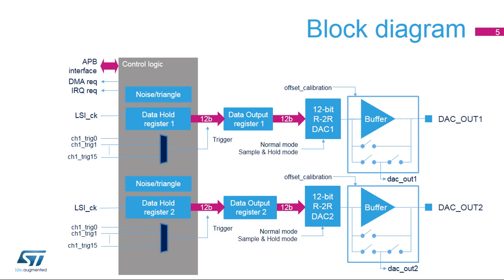DAC OUT X signals can use an internal pin to connect to on-chip peripherals such as comparators. DAC OUT X channels are buffered or non-buffered. The sample and hold block registers use the LSI clock source and are operational in stop mode for static conversions. The content of the data hold registers is transferred to the corresponding data output register when a trigger condition is detected, including software triggers.